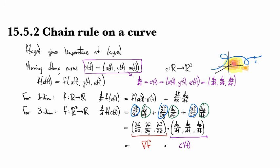This clip is about chain rule on a curve. What I mean by that is just that our location is given by this parametrized path. In particular, x and y and z are functions of a single variable. In the next clip, we'll look at how to do the chain rule when your x and y and z are functions of two variables.